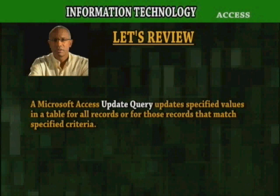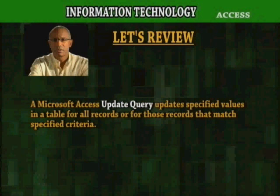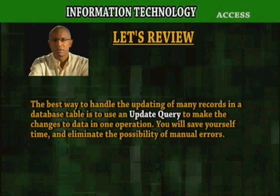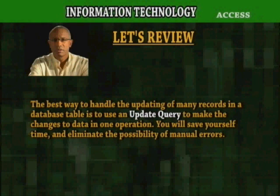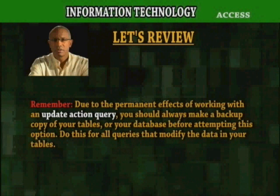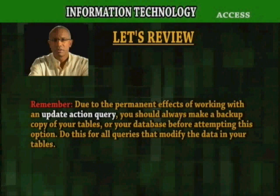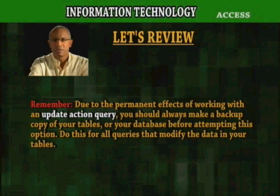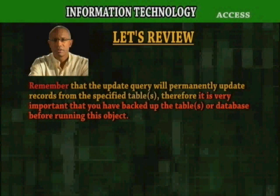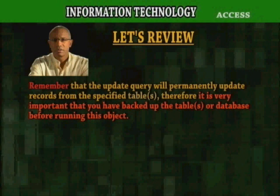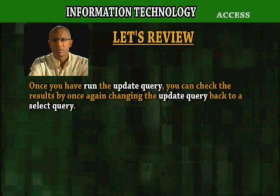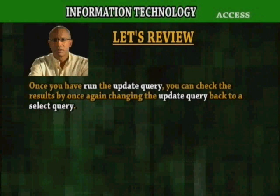A Microsoft Access update query updates specified values in a table for all records or for those that match specified criteria. The best way to handle updating many records is to use an update query to make changes in one operation, saving time and eliminating the possibility of manual errors. Remember, due to the permanent effects of working with an update action query, always back up your tables or database before running it. Once you have run the update query, you can check results by changing it back to a select query.